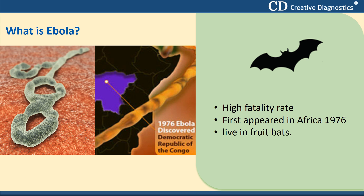Ebola is a viral hemorrhagic illness that has a high fatality rate. The virus was discovered in 1976 near the Ebola River in the present-day Democratic Republic of Congo. Since then, several small outbreaks have occurred in Africa. The 2014 outbreak is the largest.